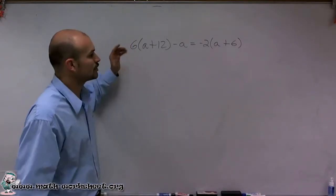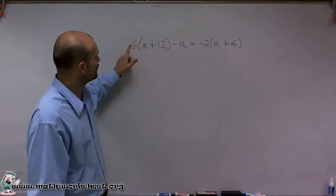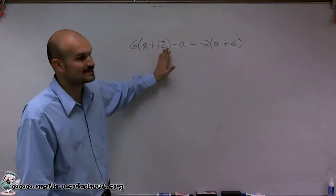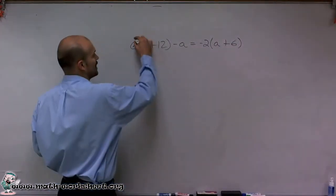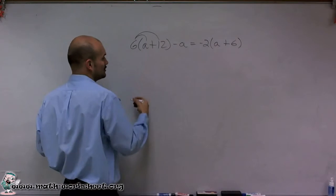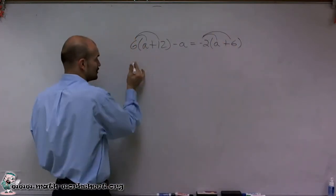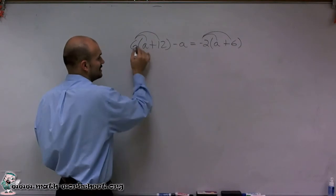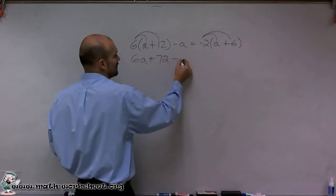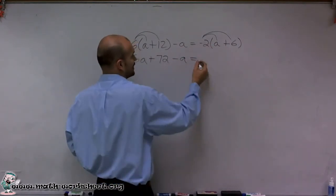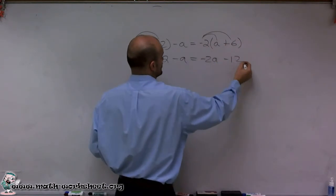So what I'm going to do is I'm going to use the distributive property. I'm multiplying my six times this parentheses and the negative two times everything inside this parentheses. So by applying the distributive property, I'm going to multiply the six times both terms. And I'm multiplying my negative two times both terms. So you have six times a is six a. Six times 12 is going to be a positive 72. And then I have a negative a is still going to be there. Then I have negative two times a, which is a negative 2a. And then negative two times six, which is a negative 12.